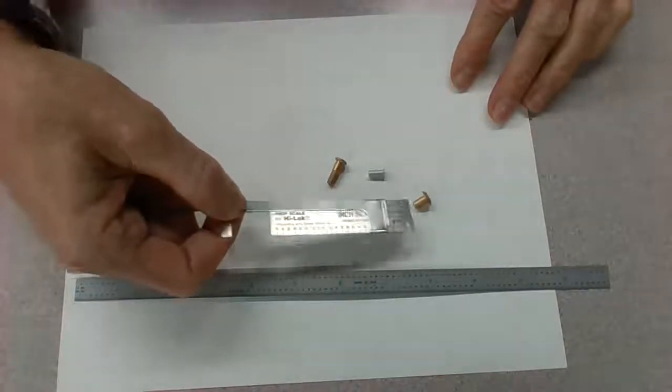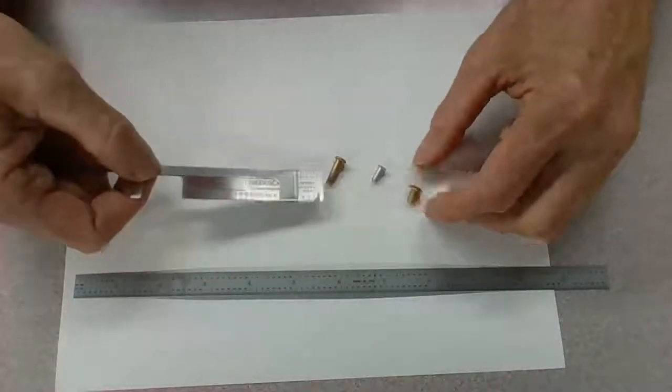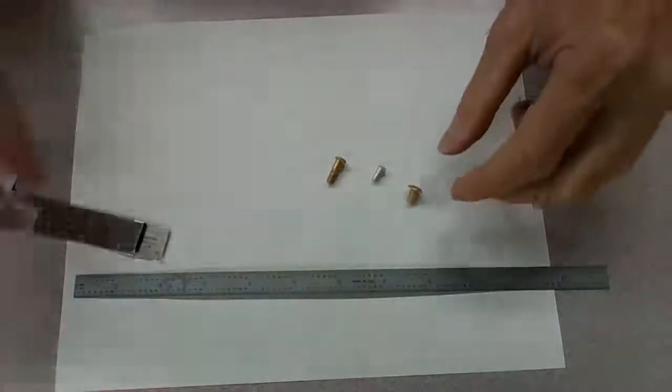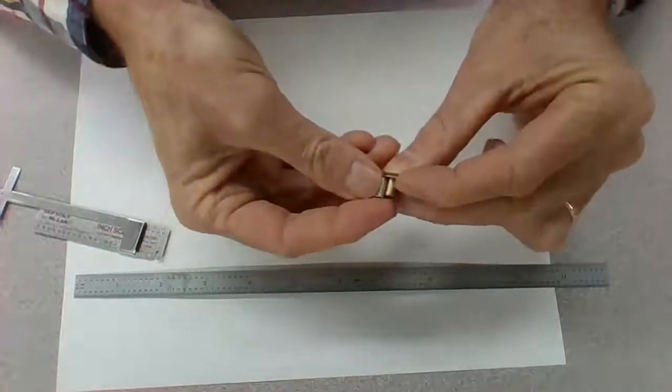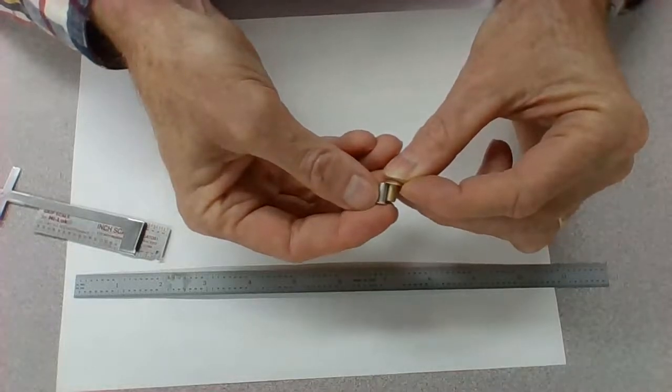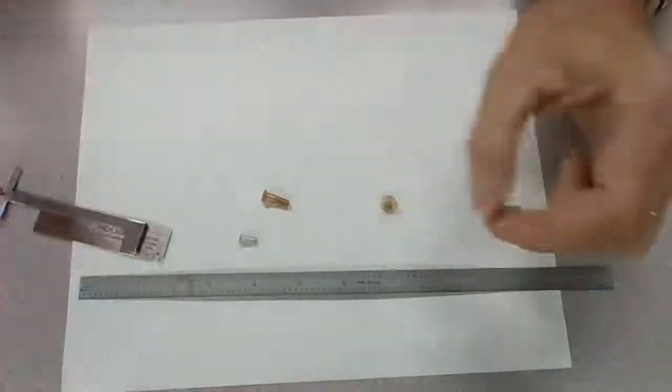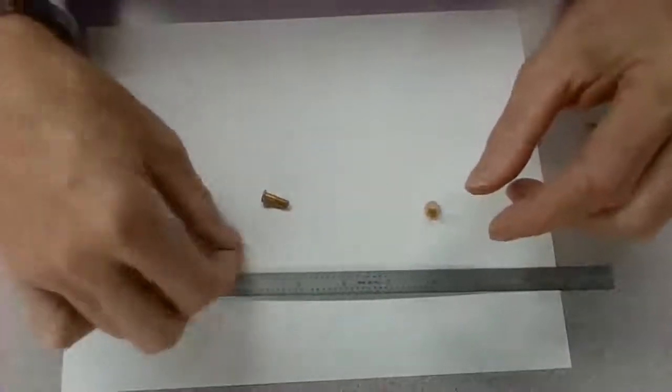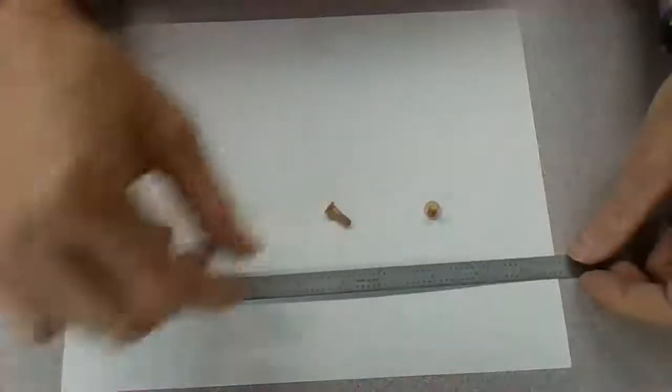So, we have a 5, 6, and a 9. And obviously, you can see the difference between the HiLock and the other two. But when you put these two together, you can also see that the countersunk rivet is larger than the button head rivet. Now, so we know that this is a 5. We know that this is a 6. We know that this is a 9.